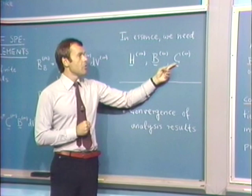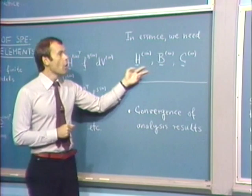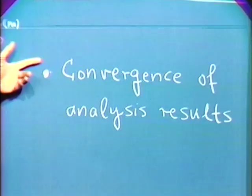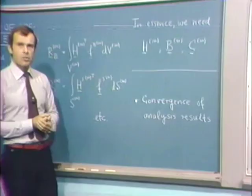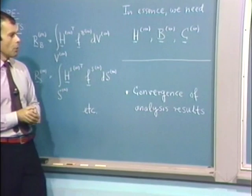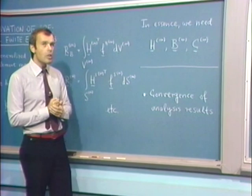I want to talk today about these matrices — how do we obtain them? Once we have talked about that subject, I also want to spend time discussing the convergence of the analysis results. In finite element analysis, we must be concerned about the accuracy and convergence of results to the actual theoretically accurate result. Let us first talk about the derivation of the H, B, and C matrices, which of course depend on the particular problem.